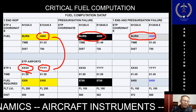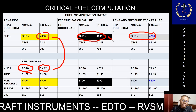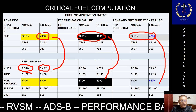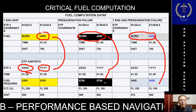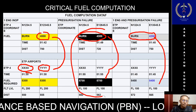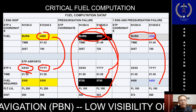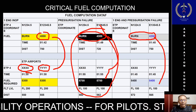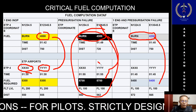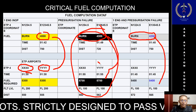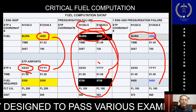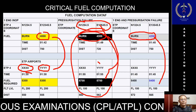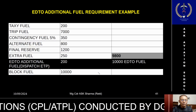Adding the fuel to the critical point and the fuel from the critical point to the alternate: under pressurization failure it is 4,300 plus 5,700 equals 10,000 kgs. This is the highest of the three scenarios, so this figure — 10,000 kgs — is the critical fuel, and the corresponding position becomes the critical point.